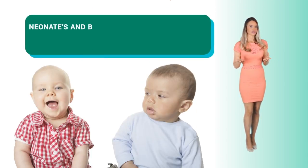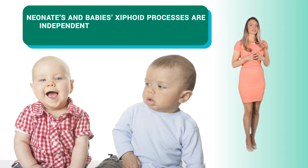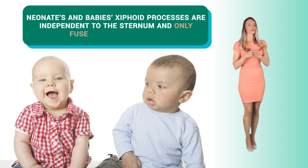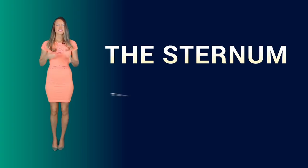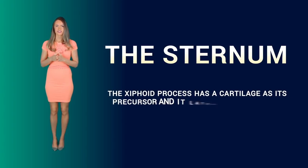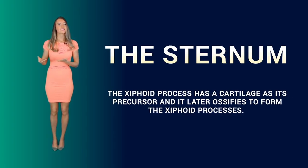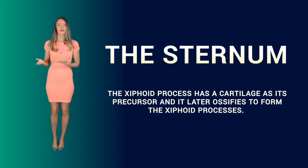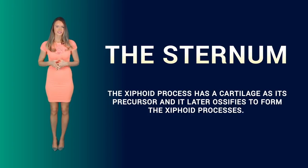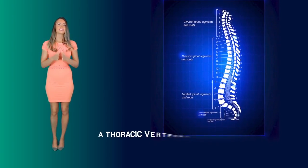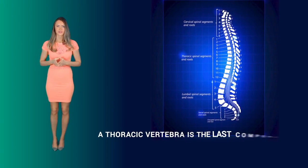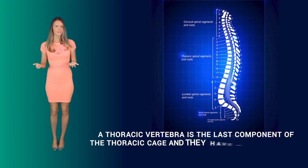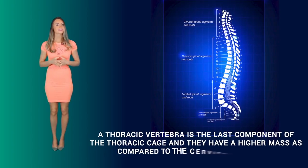In neonates and babies, xiphoid processes are independent to the sternum and only fuse later in life. The xiphoid process has cartilage as its precursor and later ossifies to form the xiphoid process. A thoracic vertebra is the last component of the thoracic cage and they have a higher mass as compared to the cervical vertebrae.